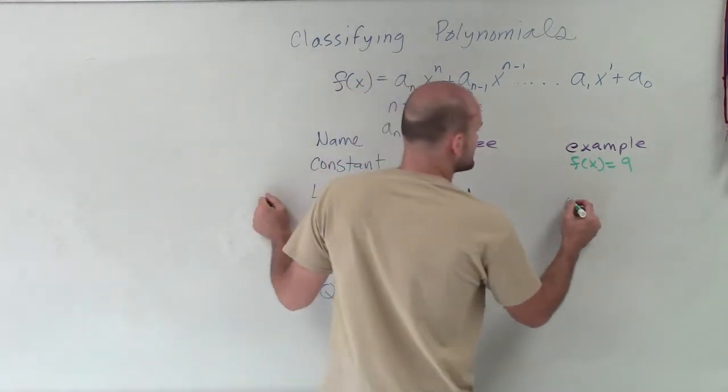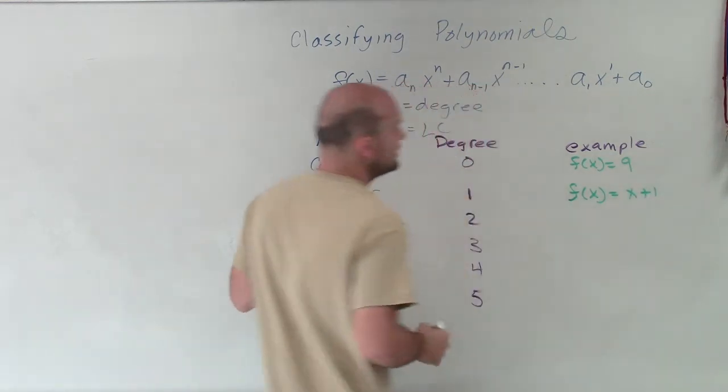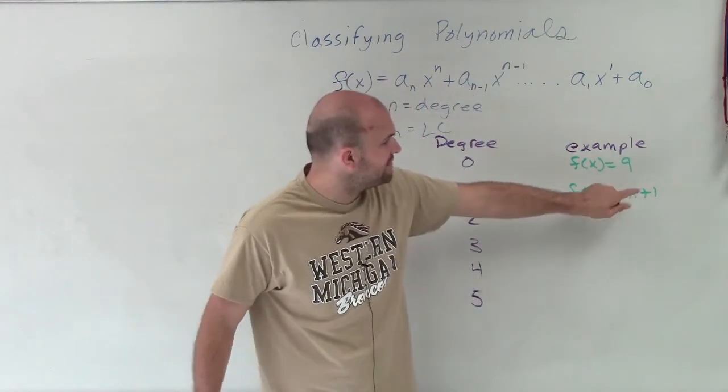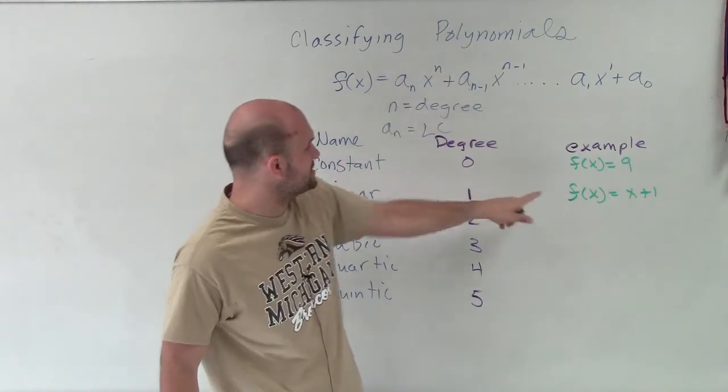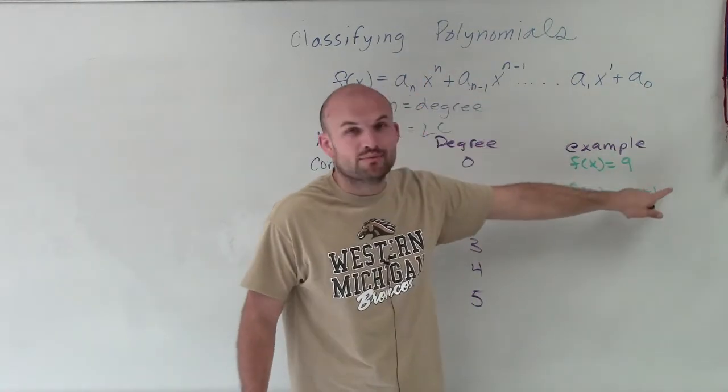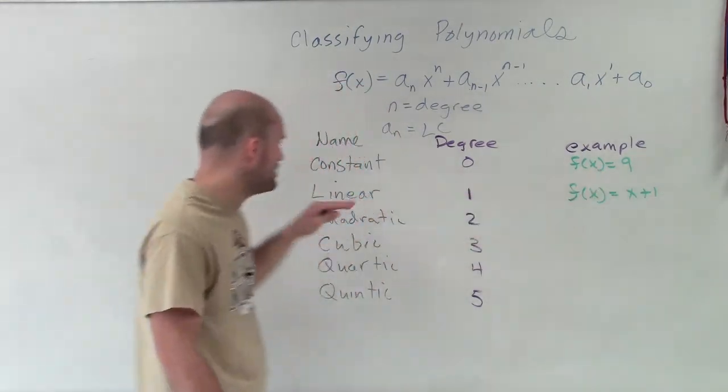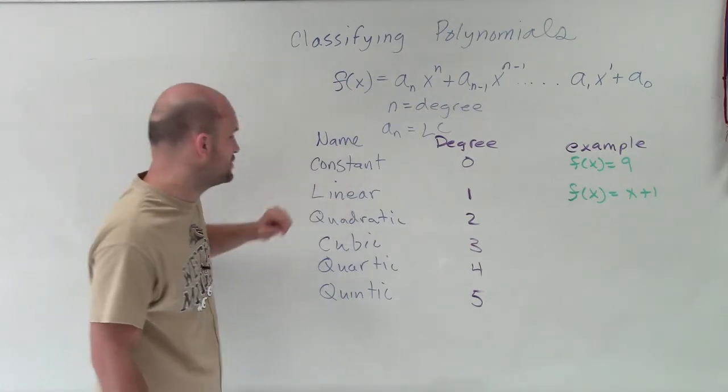When we have a linear, it's going to look something like this. f(x) = x + 1. Now, in this case, I have an x to the first. So you could see the degree of my x is 1. And then I also have a_0, which would be my constant. So any time you have your degree raised to the first power, you have a linear polynomial function.